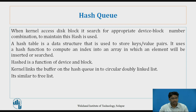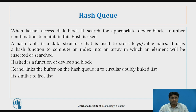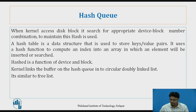When the kernel accesses a disk block, it searches for the appropriate device-block number combination. To maintain this, a hash is used. A hash table is a data structure used to store key-value pairs. It uses a hash function to compute an index into an array in which an element will be inserted or searched. The hash is a function of device and block number. The kernel links the buffers on the hash queue into a circular doubly linked list, similar to the free list.